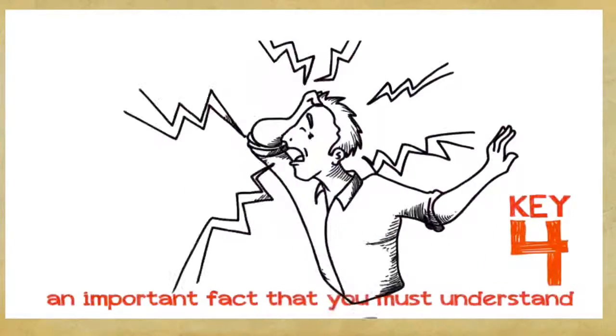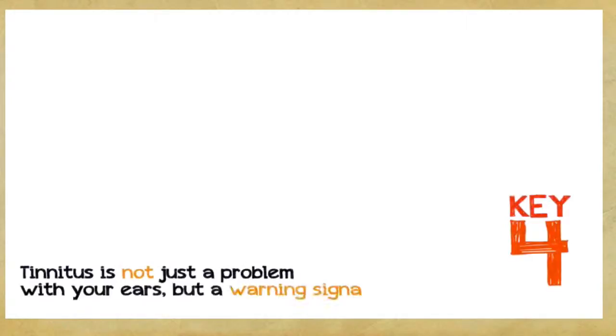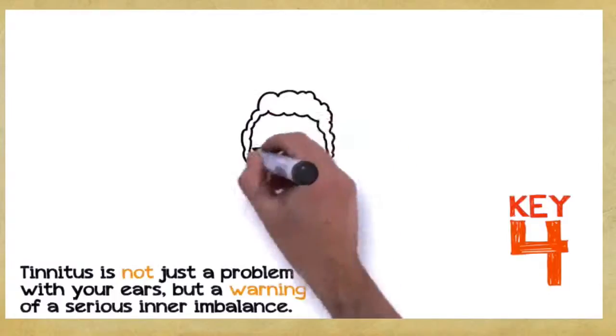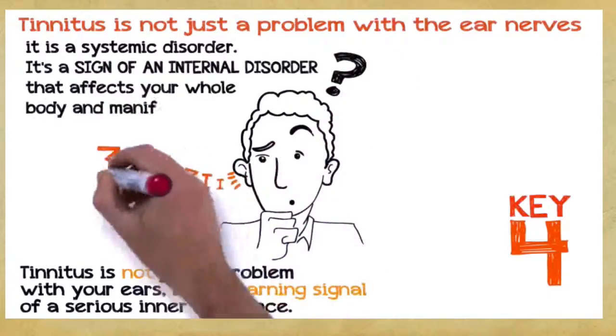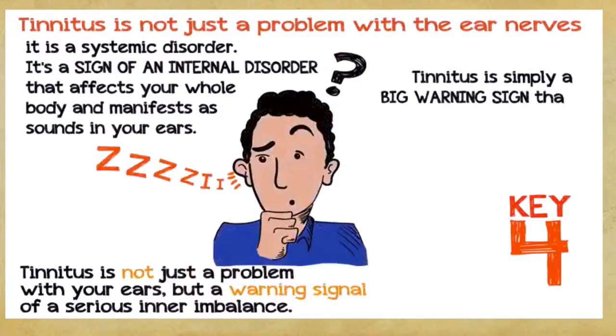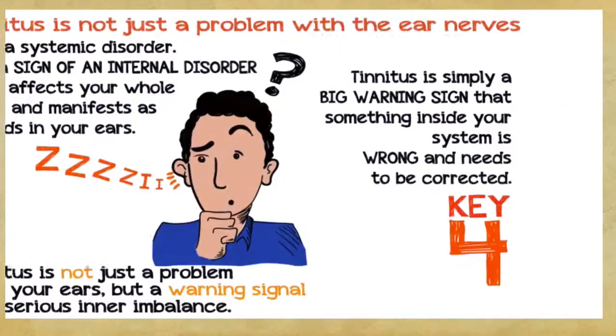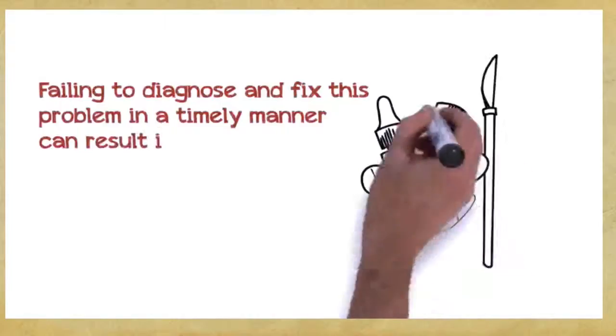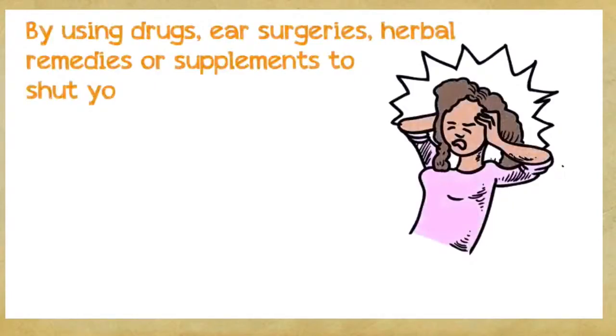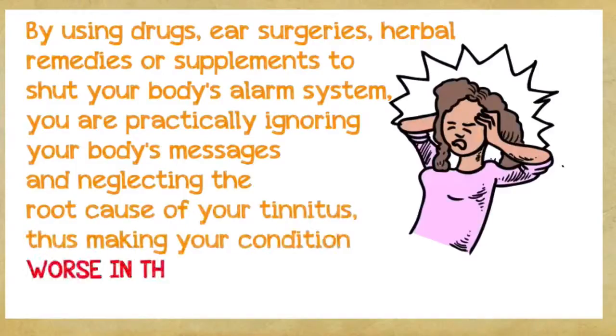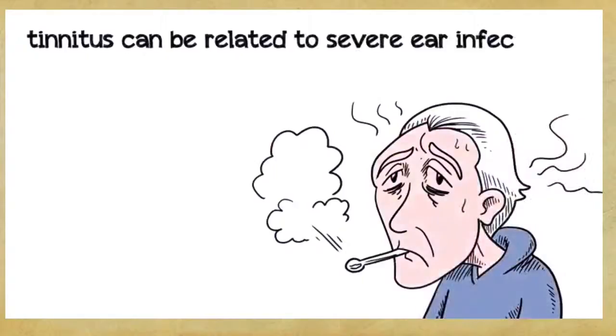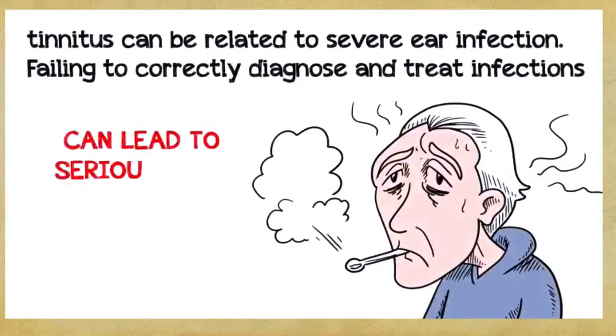Key number four: This is a very important fact that you absolutely must understand if you want to save hundreds or even thousands of dollars. Tinnitus is not just a problem with your ears, but a warning signal of a serious inner imbalance. In the vast majority of cases, tinnitus is not just a problem with the ear nerves, it's a systemic disorder. It's a sign of an internal disorder that affects your whole body and manifests as sounds in your ears. Tinnitus is simply a big warning sign that something inside your system is wrong and needs to be corrected. Failing to diagnose and fix this problem in a timely manner can result in a far more severe and chronic disorder. By using drugs, ear surgeries, herbal remedies, or supplements to shut your body's alarm system, you're practically ignoring your body's messages and neglecting the root cause of your tinnitus, thus making your condition worse in the long run. For example, tinnitus can be related to severe ear infection. Failing to correctly diagnose and treat infections can often lead to serious long-term health consequences.